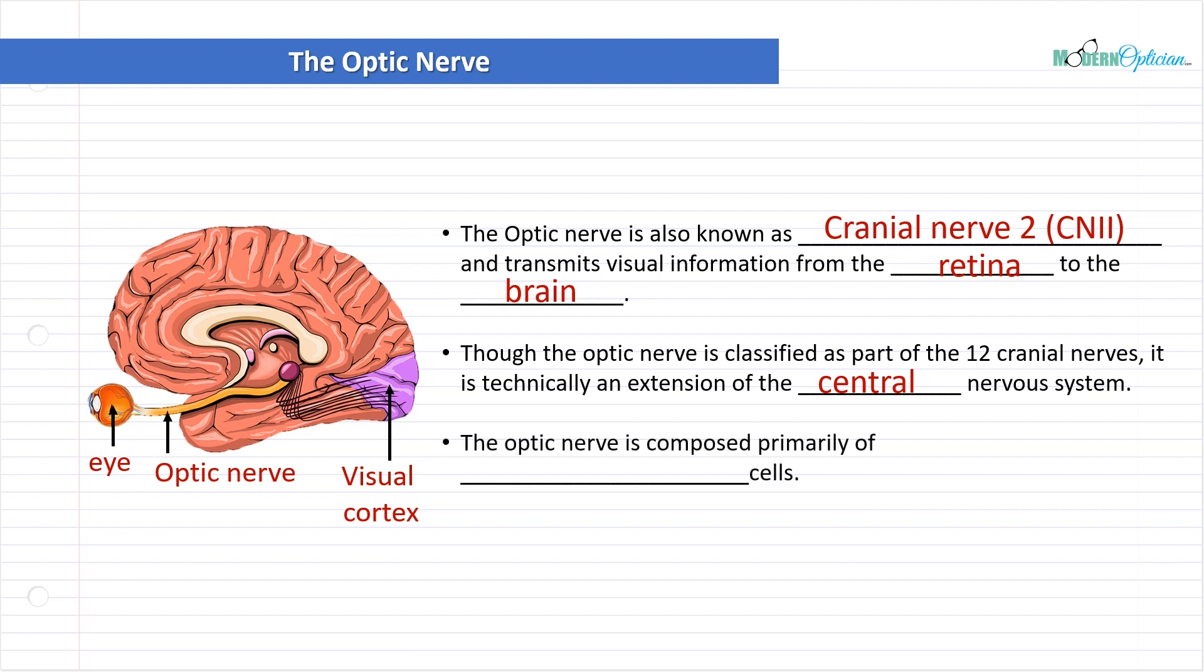And the optic nerve is composed primarily of retinal ganglion cells. We talked about that, right? How the retina and the optic nerve are super closely related. Well, it makes sense that if the retina is transmitting information to the optic nerve and it shares cells and is kind of intertwined, would it not make it easier? A lot of things in the body just make sense once you start breaking it all down.